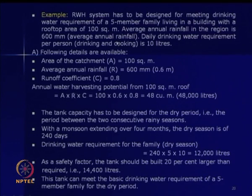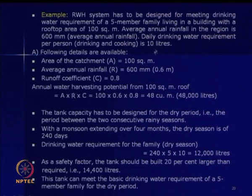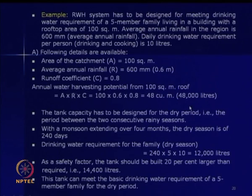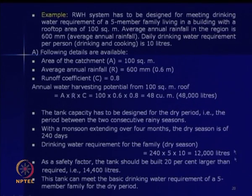A simple design example: a rainwater harvesting system is designed for meeting drinking water requirements for a 5-member family in a building with a rooftop of 100 square meters. Average annual rainfall is 600 mm; daily drinking water requirement per person is 10 liters. Catchment area is 100 sq m, rainfall is 0.6 m, collection efficiency 0.8, giving average annual water harvesting of 48 cubic meters. For a 240-day dry period with a 20% extra allowance, the required storage is 14,400 liters.